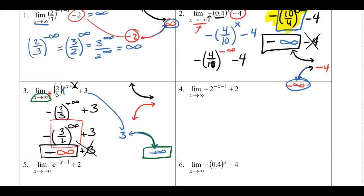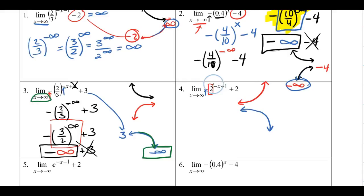For Example 4, the base is greater than 1 — a growth function. The negative in front gives a vertical reflection (what was up now goes down), and the negative exponent gives a horizontal reflection (what went left now goes right). The y-shift value is 2, which is the horizontal asymptote. As x approaches positive infinity, the graph approaches 2, while to the left it heads to negative infinity.